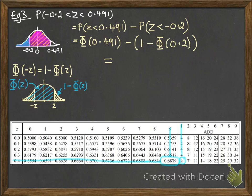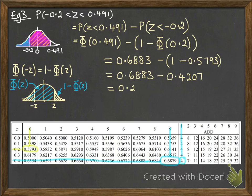So we need to look those up. So the first one, 0.491. We're going to do 6879 plus 4 to get 6883. And then Φ(0.2). We don't have anything to add on there. We just take off that 0.5793 from 1. And there we have our final answer.